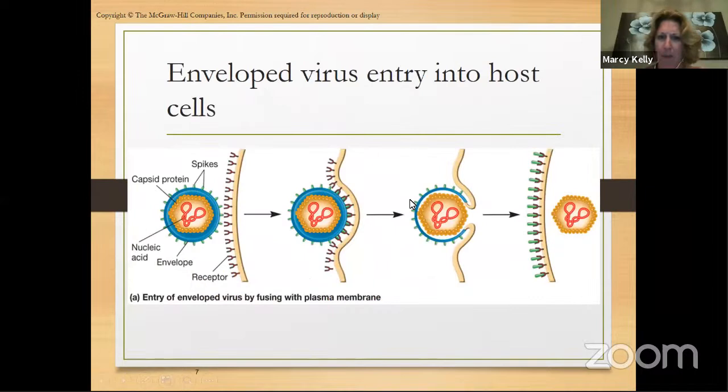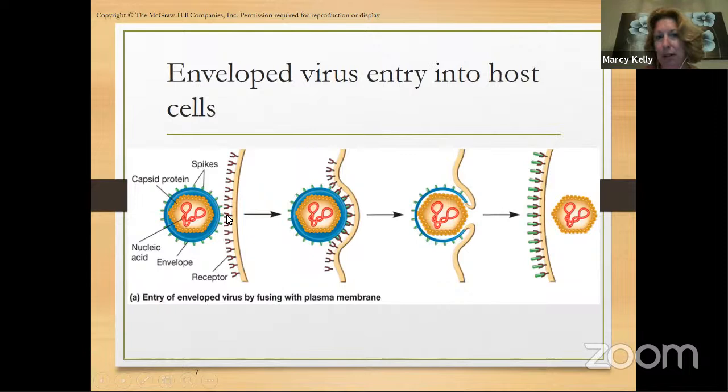This is honing in a little more on the entry — the attachment part. SARS-CoV-2 has a spike protein that is going to bind to the ACE2 receptor. Once they interact, the virus can slowly push in and get into the host cell.